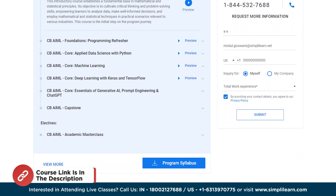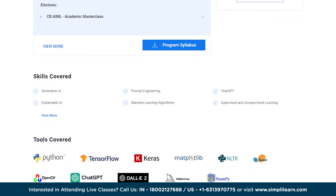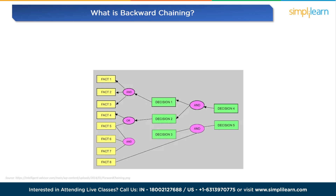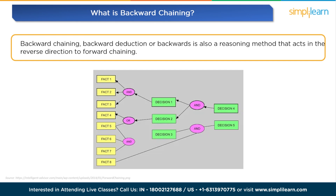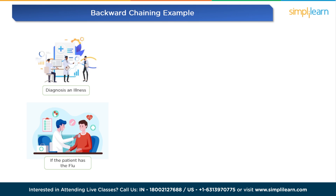So without any further ado, let's get started. What is backward chaining? Backward chaining — also called backward deduction or backwards reasoning — is a reasoning method that acts in the reverse direction to forward chaining. This top-down approach involves using decisions or goals to reach the facts. Backward chaining is a backtracking process commonly finding usage in diagnostic, debugging, and prescription applications.